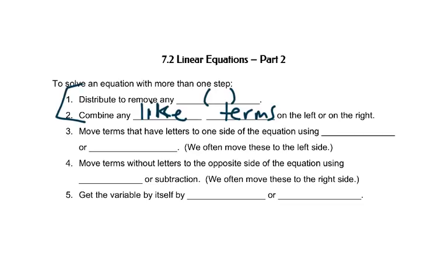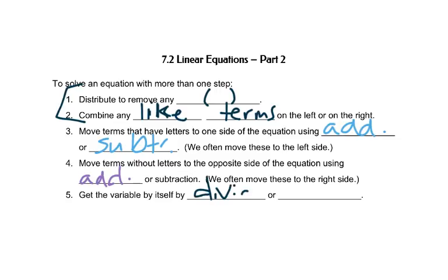Then we'll start moving things. We'll move the things that have letters to the left using addition or subtraction, and then we'll move the things that have numbers to the right using addition or subtraction. Then finally you get the variable by itself by dividing or multiplying.